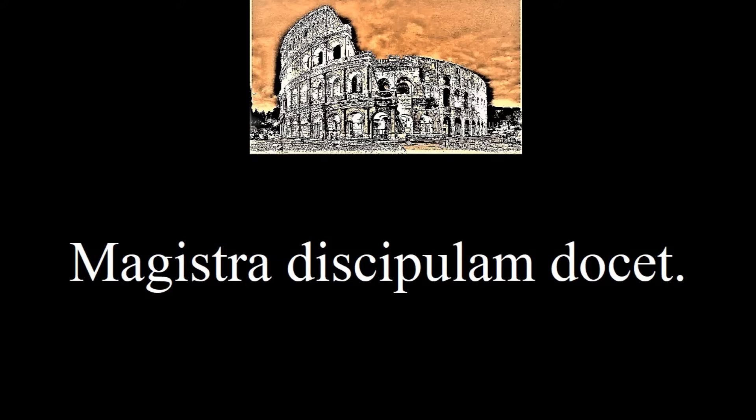Look at the next sentence now: Magistra discipulam docet — the teacher teaches the student. Do you see how discipula changed form? The subject and object of the verb have different forms so that we can tell them apart.